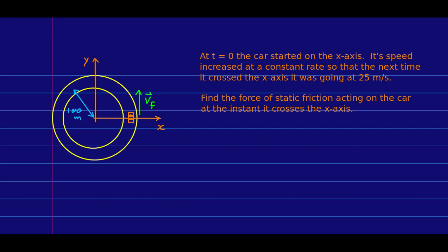So now let's work a non-uniform circular motion problem. Here's a car, and it starts at rest here on the x-axis, and it speeds up at a constant rate going around this circle, so that the next time it crosses the x-axis, it's going 25 meters per second. Now notice something: the rate of change of speed is constant. However, the acceleration is not constant. Not even the magnitude of acceleration is constant, because the radial part of it depends on speed.